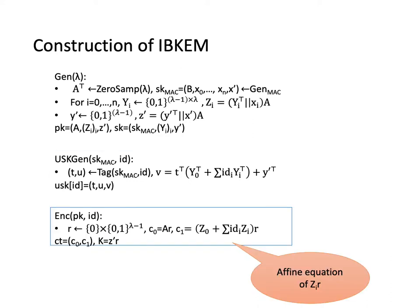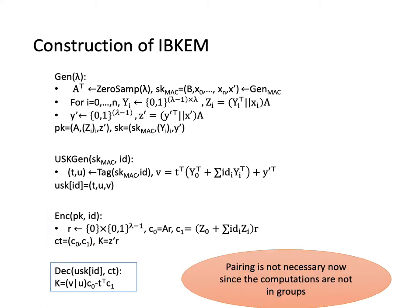The encryption algorithm first samples the random vector with the first bit being 0 and vectors C₀ and C₁. C₀ is AR and C₁ is computed by an affine equation of zᵢR. The session key K is equal to z'R. The decryption algorithm is designed similar to the BKP framework. But notice that the pairing is not necessary now since the computations are not in the groups.